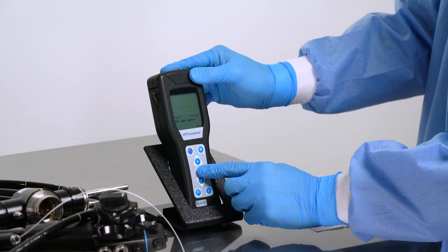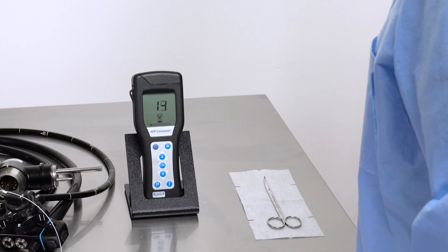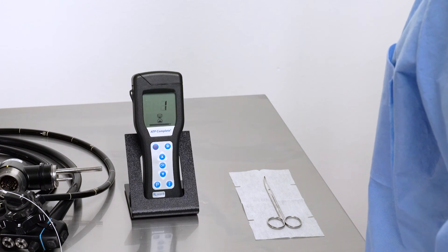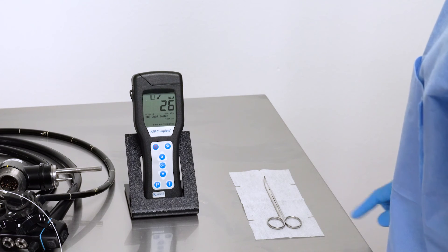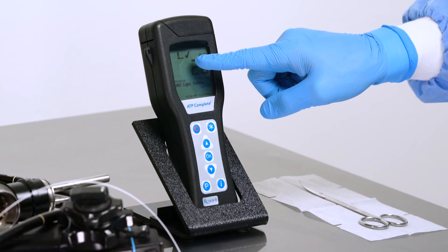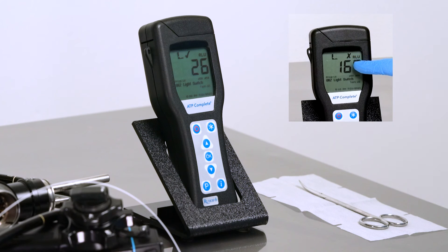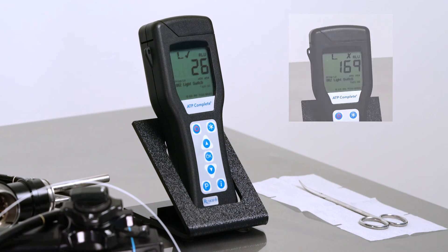In 15 seconds, the ATP Complete device will display the amount of contamination detected. A check mark indicates that the test has passed while an X appears if the test has failed. A failed test signals that the scope must be recleaned and tested again.